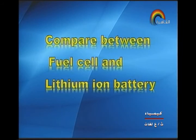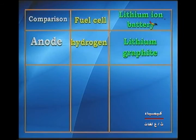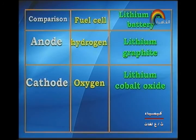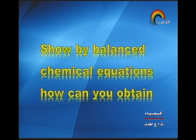Next type of question: compare between the fuel cell and lithium ion battery. Anode: hydrogen in fuel cell; lithium graphite in lithium ion battery. Cathode: oxygen in fuel cell; lithium cobalt oxide in lithium ion battery. Electrolyte: potassium hydroxide in fuel cell; hexafluorophosphate lithium salt in lithium ion battery.